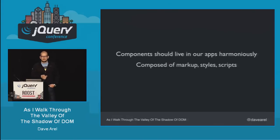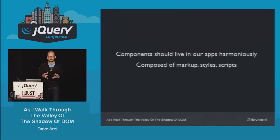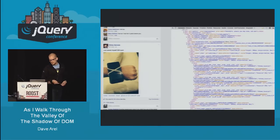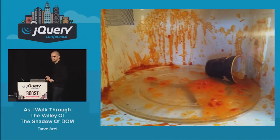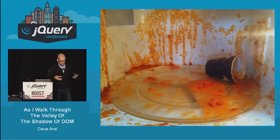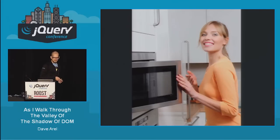Components should really live in our apps harmoniously, not in the way we've had it before where we just dump it in and it could mess up our app. They should be composed of markup, styles, and scripts. We should get away from the div soup we've come to know. But what if there was a way we could clean up our markup and really build powerful applications that are separated?